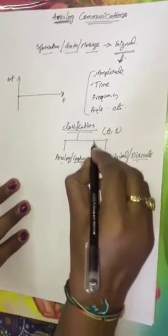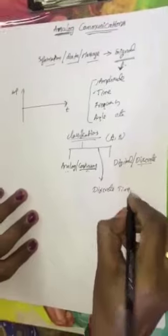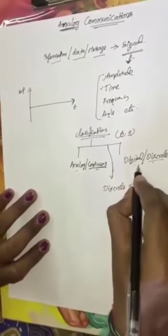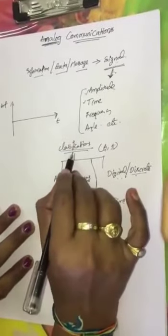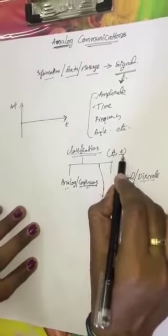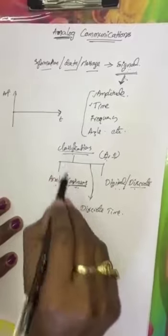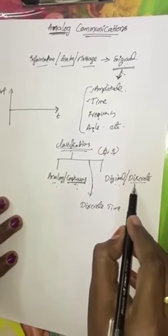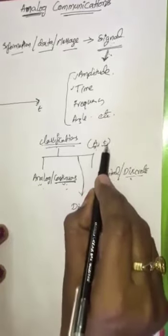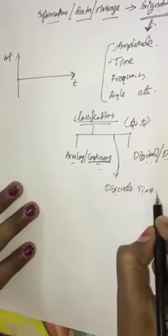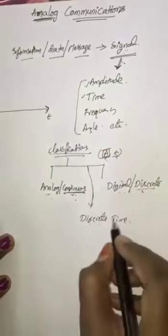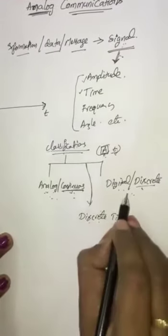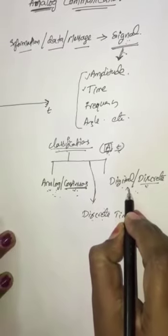There is one more signal type called discrete time signal — a classification that lies in between the analog signal and the discrete signal. To repeat: if both amplitude and time are continuous, it is a continuous or analog signal. If both are discrete, it is a discrete signal. If only time is discrete while amplitude is still continuous, that signal is called a discrete time signal. As engineering students, we generally classify signals as either analog or digital.